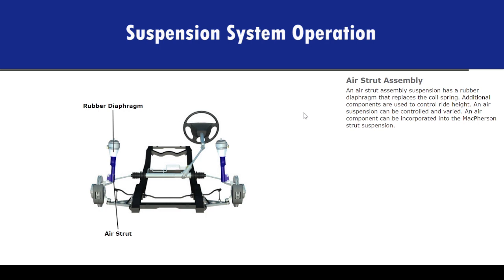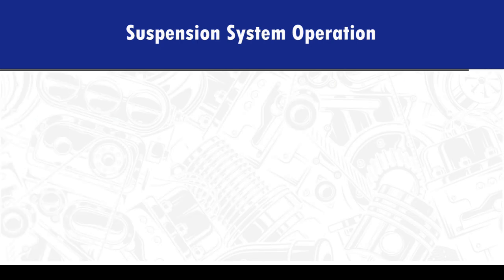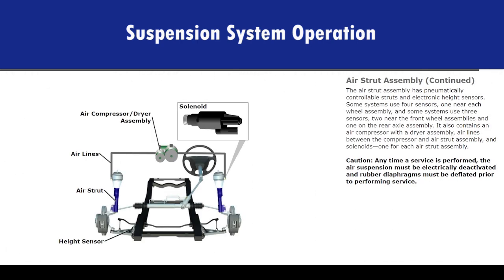An air strut assembly suspension has a rubber diaphragm that replaces the coil spring. Additional components are used to control ride height, and an air suspension can be controlled and varied. An air component can be incorporated into the McPherson strut suspension. The air strut assembly has pneumatically controllable struts and electronic height sensors. Some systems use four sensors, one near each wheel assembly, and some systems use three sensors — two near the front wheel assemblies and one on the rear axle assembly. It also contains an air compressor with a dryer assembly, air lines between the compressor and air strut assembly, and solenoids, one for each air strut assembly.